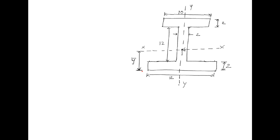Now, to find out the polar moment of inertia, our first step will be to divide this I-section into three rectangles. The first rectangle I am taking as rectangle ABCD, the second rectangle is EFHI, and the third rectangle is JKLM. So first we divide this I-flange into three rectangles: ABCD, EFHI, and JKLM. Next, we have to find out the areas of these three rectangles.